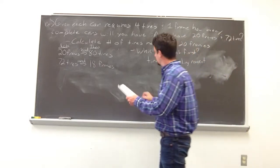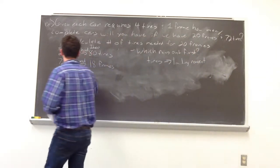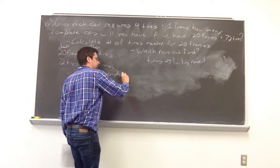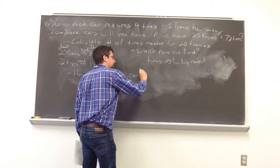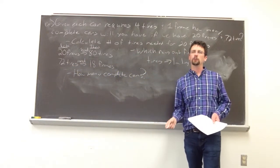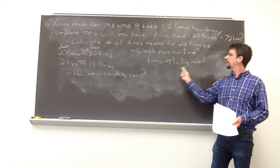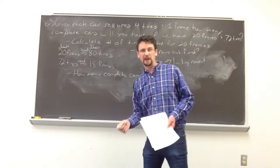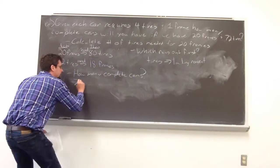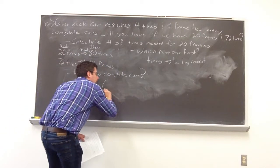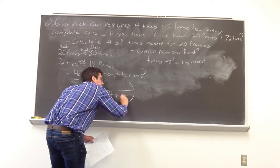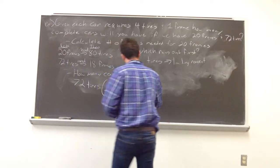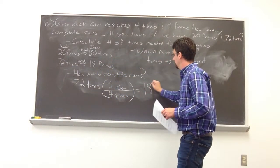Now we ask: how many complete cars are we going to have? We want to use the limiting reagent here, because we know we're stuck based on the number of tires — they're going to run out first. Starting with 72 tires, with four tires for every one car, we divide through and get 18 cars.